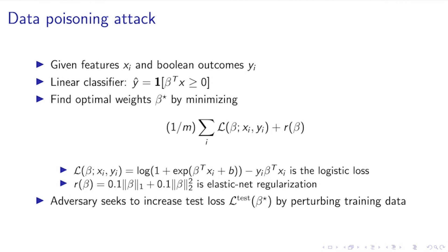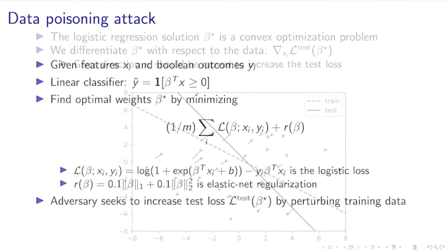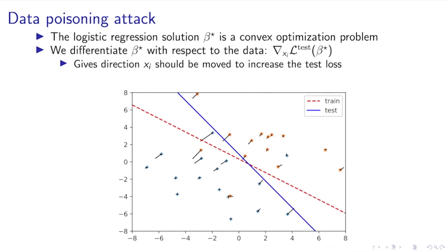In the data poisoning setting, the adversary seeks to increase the test loss by perturbing the training data in a minimal possible way. Through the lens of differentiable convex optimization, we're able to show that we can see the optimal hyperplane beta star as just being a function of the input data, and thus we can differentiate through the maximum likelihood operation because it's convex, and we can obtain the derivative of the test loss with respect to the training data. This gives us the direction to move the training data to best increase the test loss, and this is what we use as the adversary to best hurt the test loss performance.